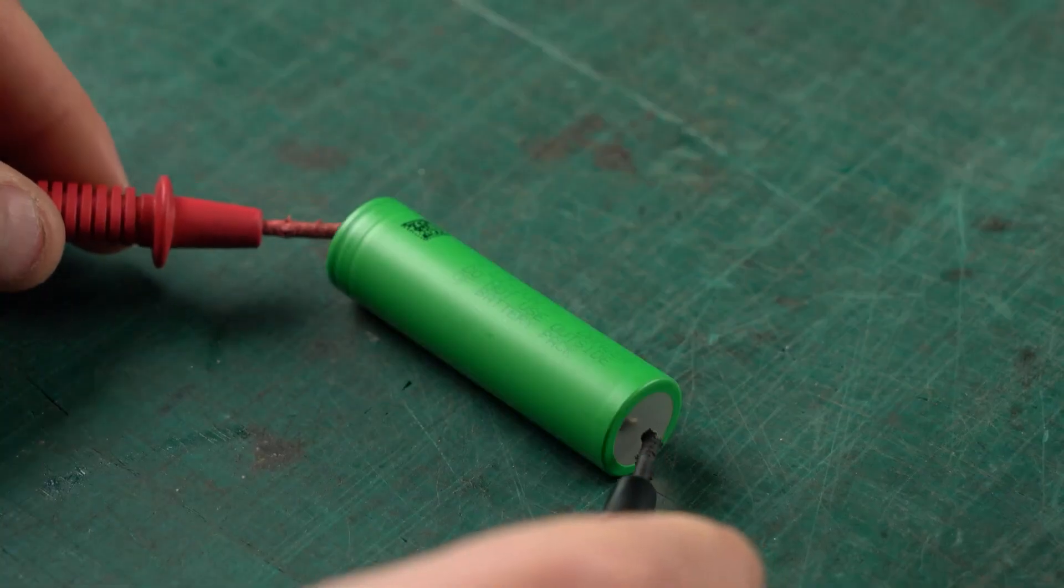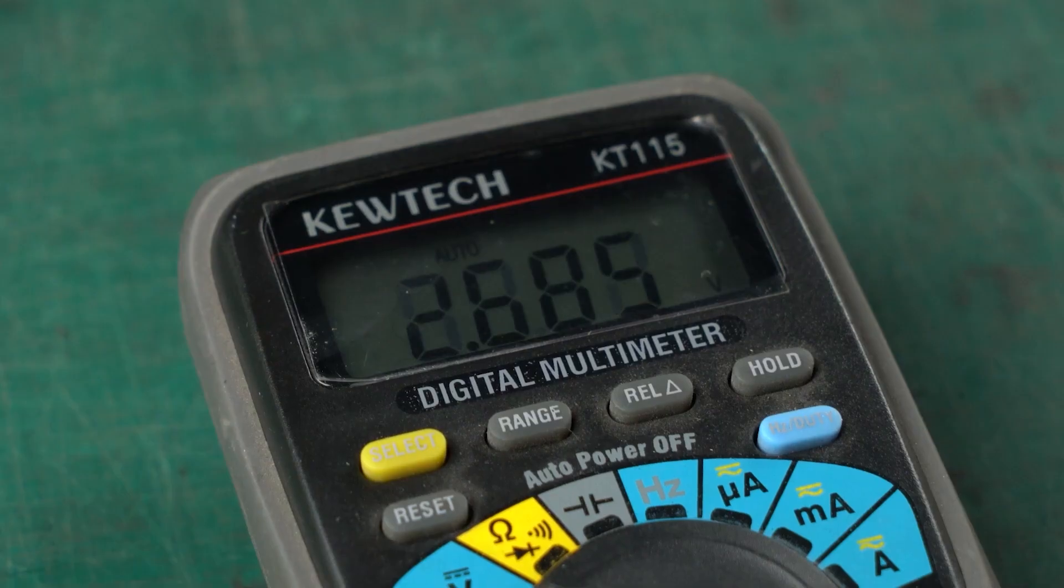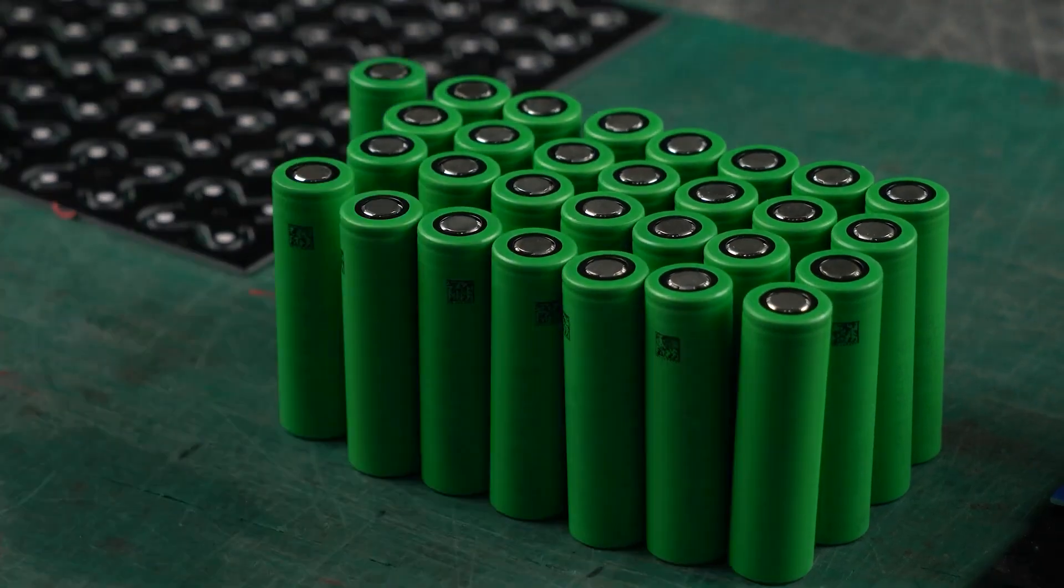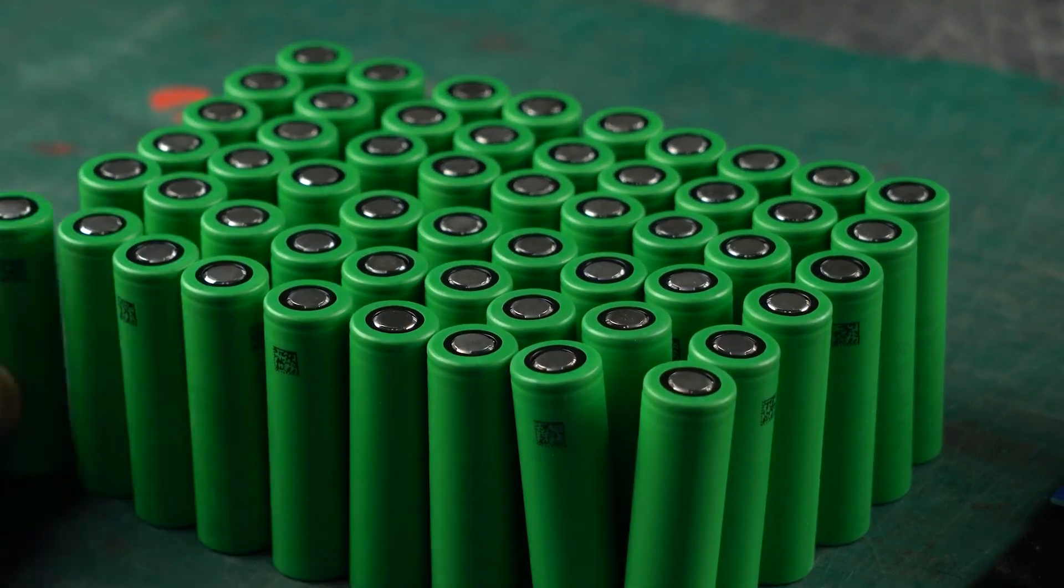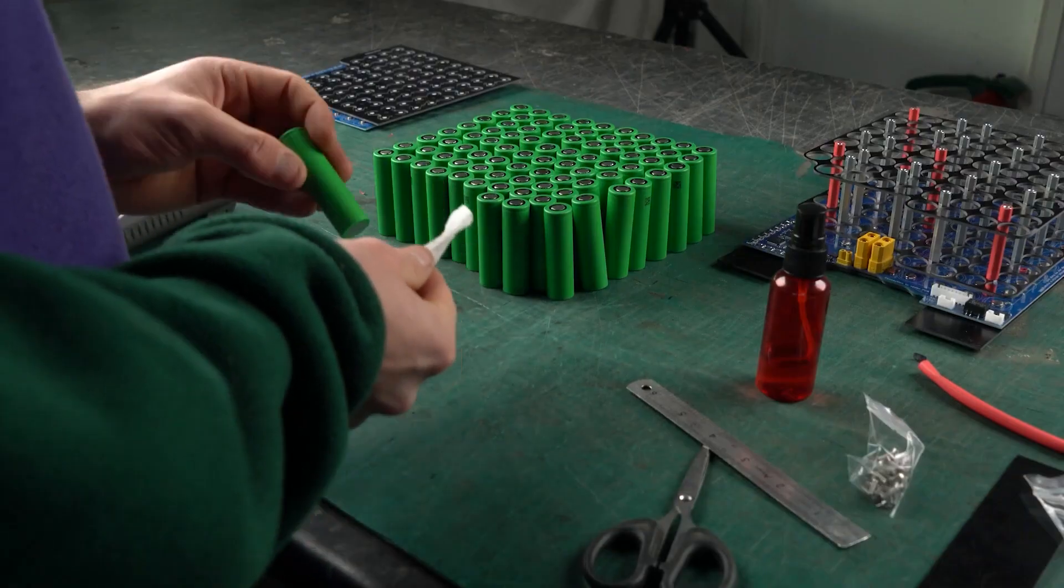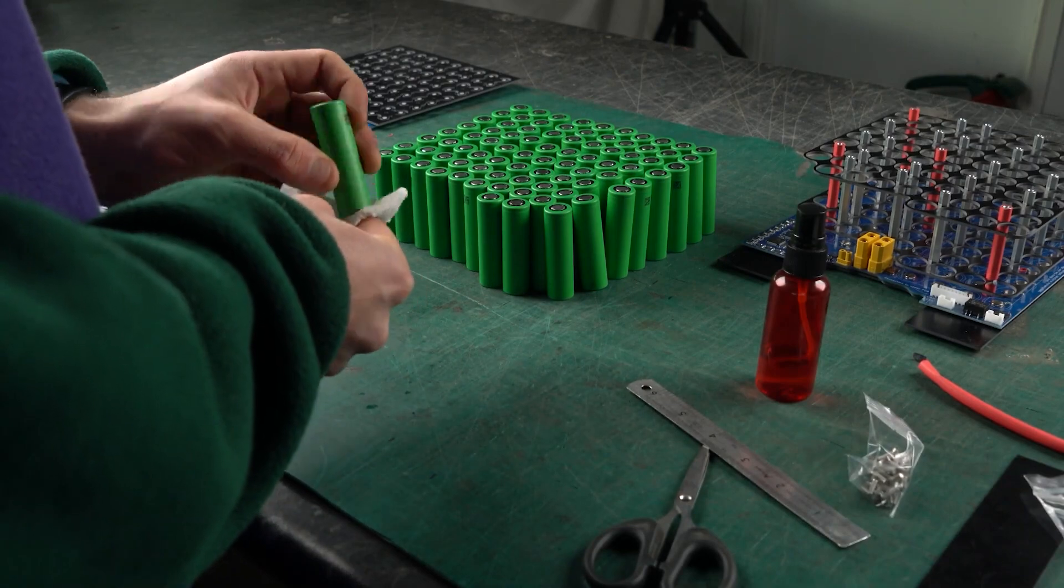First thing to do is check them all. They must all be the same type, age, wear and charge level. Never use damaged cells. Once checked, clean all the battery poles with isopropyl alcohol.